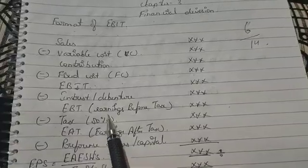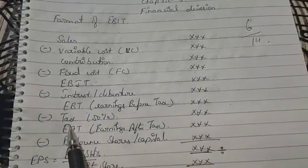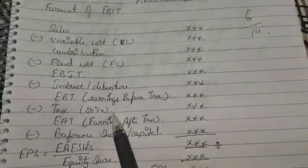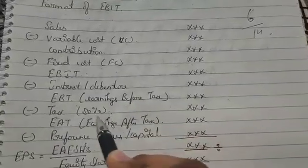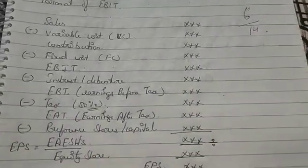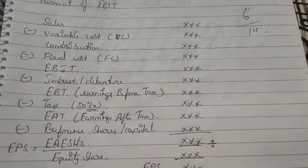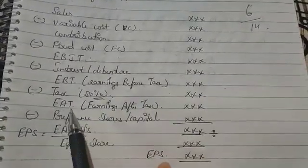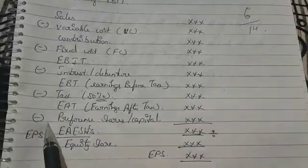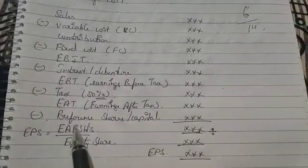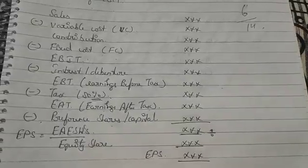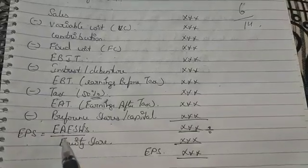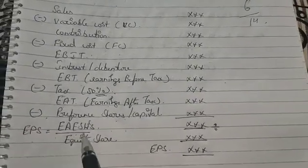EBT - Earnings Before Tax. Then minus Tax. If they have not given tax information in the question, take 50%. If they have given 45% or 35%, use that. Then EAT - Earnings After Tax. Here we deduct Preference Share capital or Preference Dividend. After deducting that, we get EAESH - Earnings Available to Equity Shareholders.